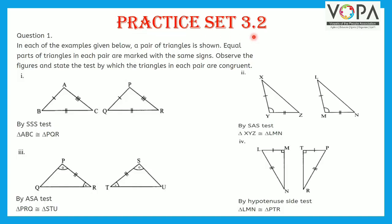Practice Set 3.2, Question 1. In each of the examples given below, a pair of triangles is shown. Equal parts of triangles in each pair are marked with the same signs. Observe the figures and state the test by which the triangles in each pair are congruent.